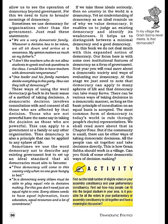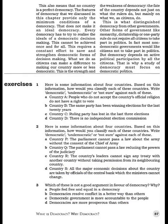Still, we value democracy, judge it, identify its weaknesses, and complain about it — and this helps us distinguish between democracy and good democracy. Our focus here is on the core institutional features of democracy as a form of government. Democracy can apply to many spheres of life and can take many forms. There can be various ways of taking decisions in a democratic manner, as long as the basic principle of consultation on an equal basis is accepted. At the village level, all the people can sit together and take decisions directly — this is how our Gram Sabha works.